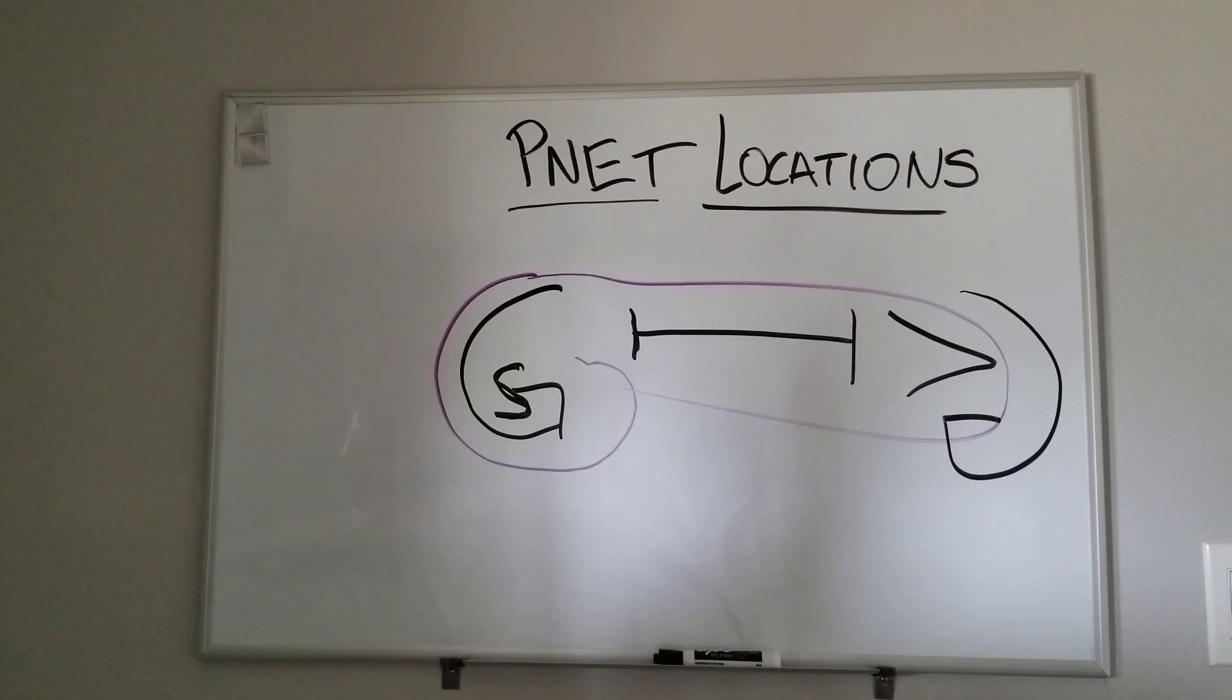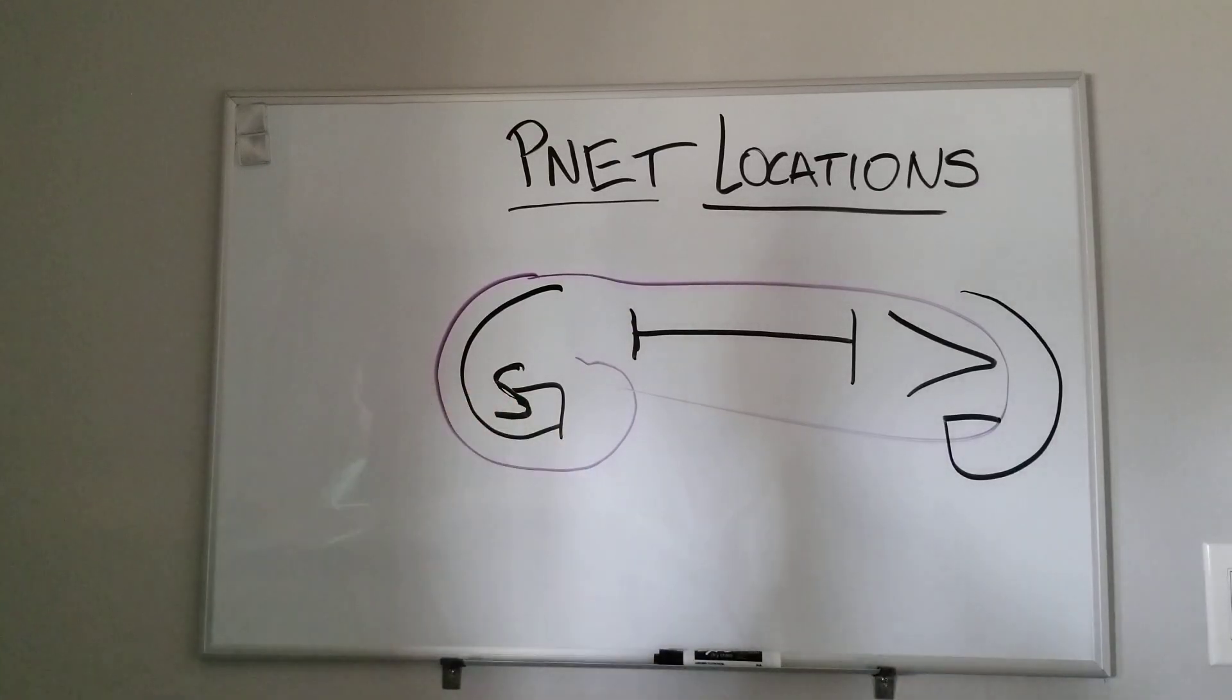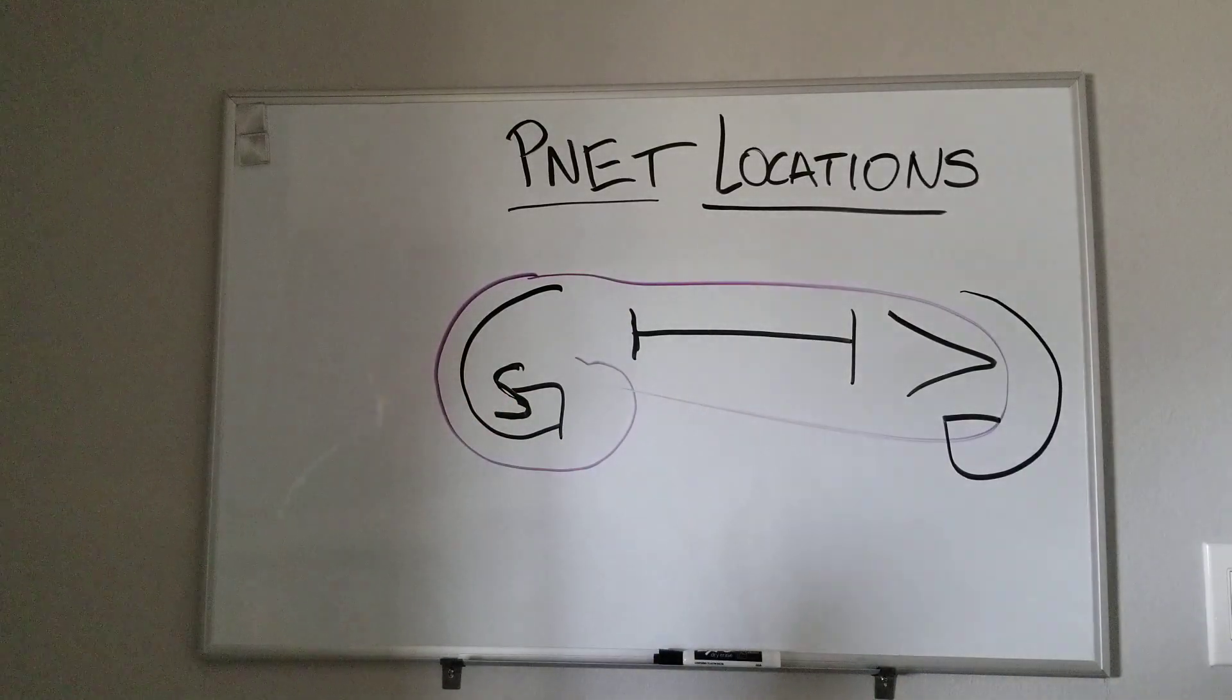So if you had a question where they found a tumor located in the very tip of the tail of the pancreas, your mind would already start thinking VIPoma, glucagonoma, or maybe insulinoma. But you'd have a less likely index of suspicion for somatostatinoma or gastrinoma. Thanks.